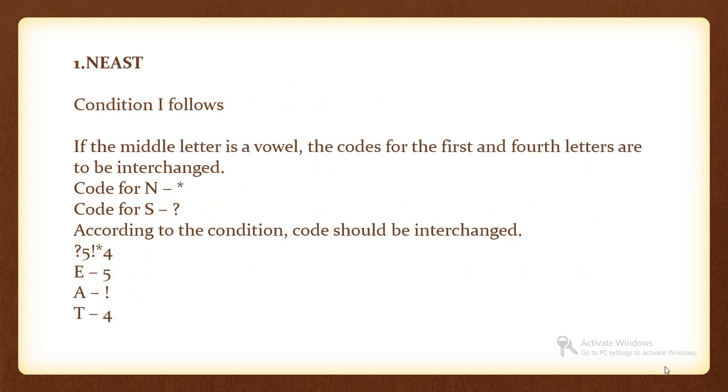Condition 1 follows. If the middle letter is a vowel, the codes for the first and fourth letters are to be interchanged. Code for N is asterisk and code for S is question mark. According to the condition, code should be interchanged.